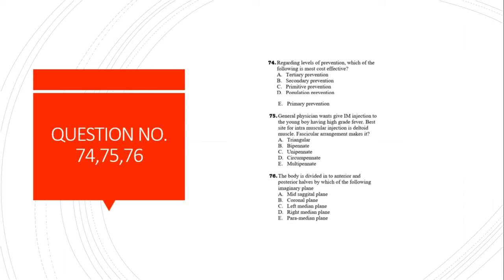Question 74: Regarding levels of prevention, which is most cost-effective? Tertiary prevention is basically the most cost-effective level of prevention.